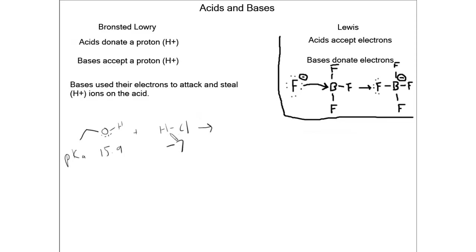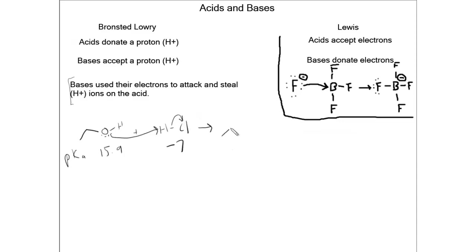Hydrochloric acid is going to donate its proton. Ethanol is going to act as our base — it is going to accept the proton. Bases use their electrons to attack and steal hydrogen ions on the acid. So this alcohol group is going to use a lone pair of electrons to attack the hydrogen on the acid. These electrons are going to attack and form a bond with the hydrogen on the acid, which means that the electrons bonding chlorine to hydrogen are going to go sit on what will be the conjugate base.